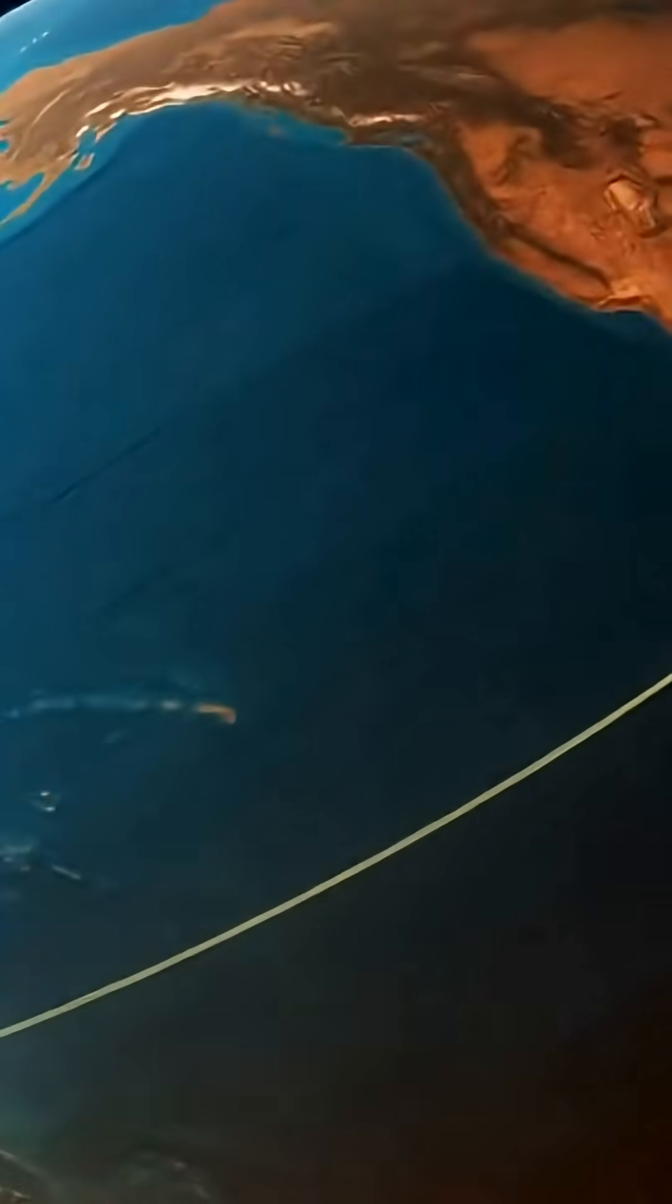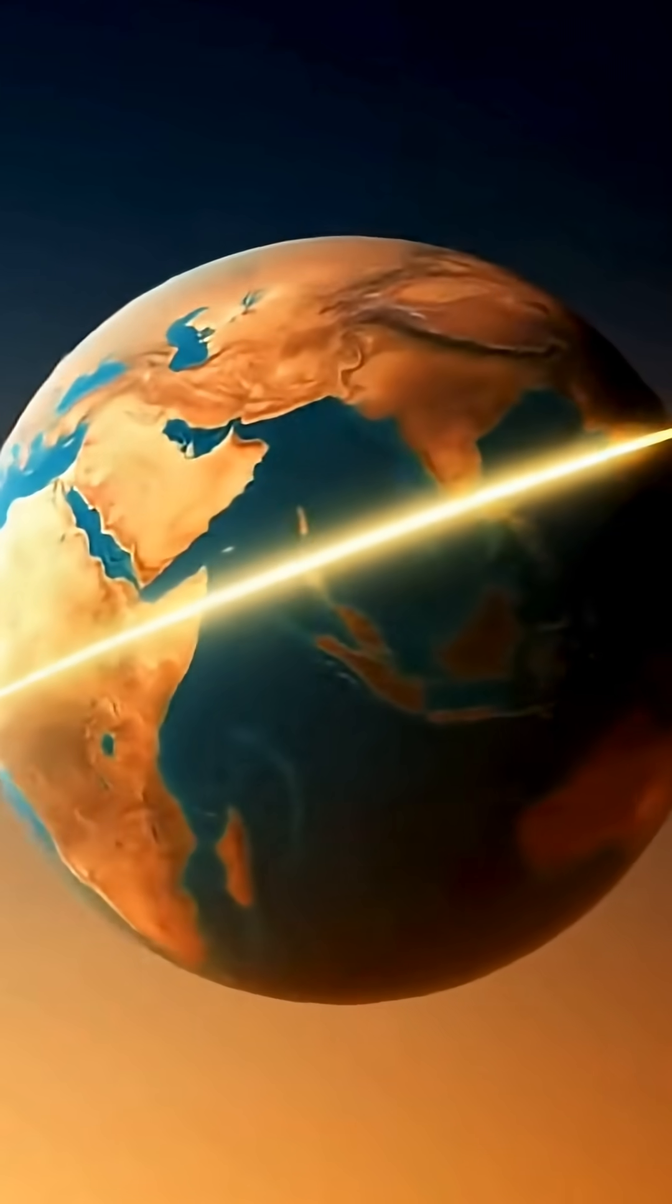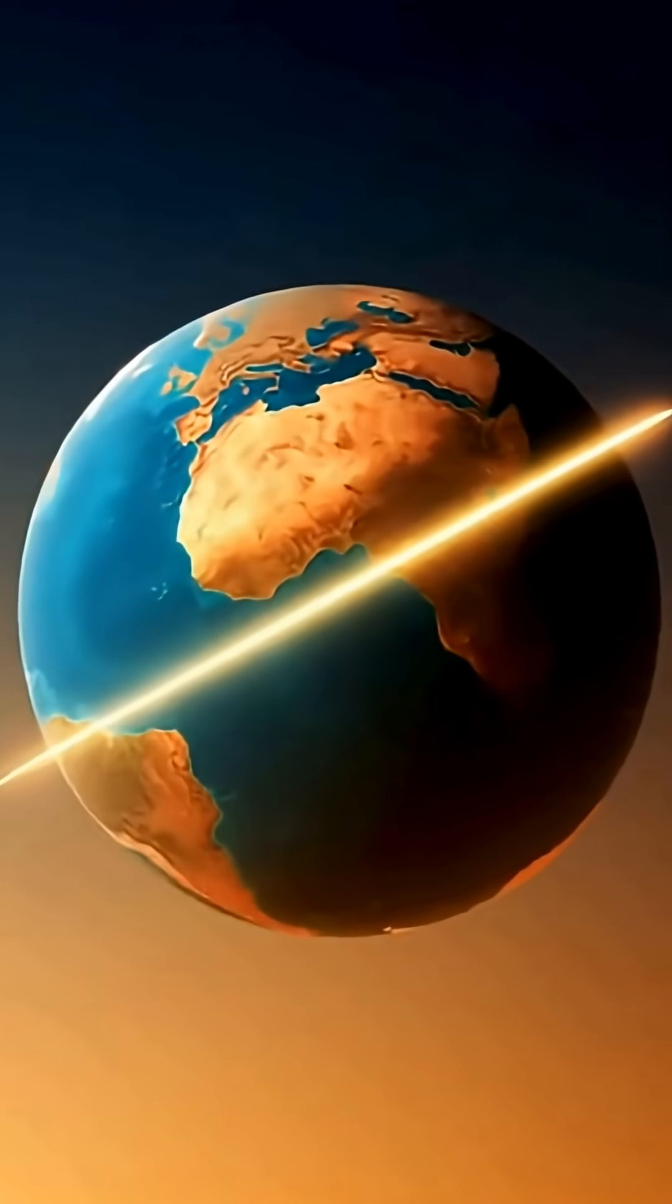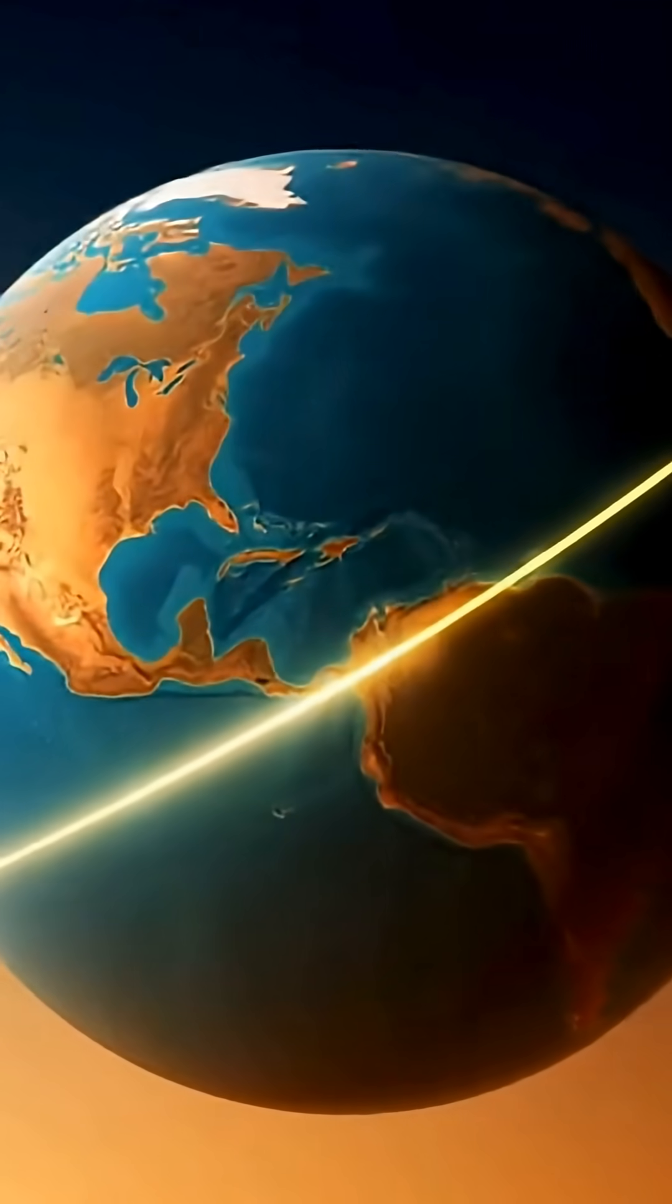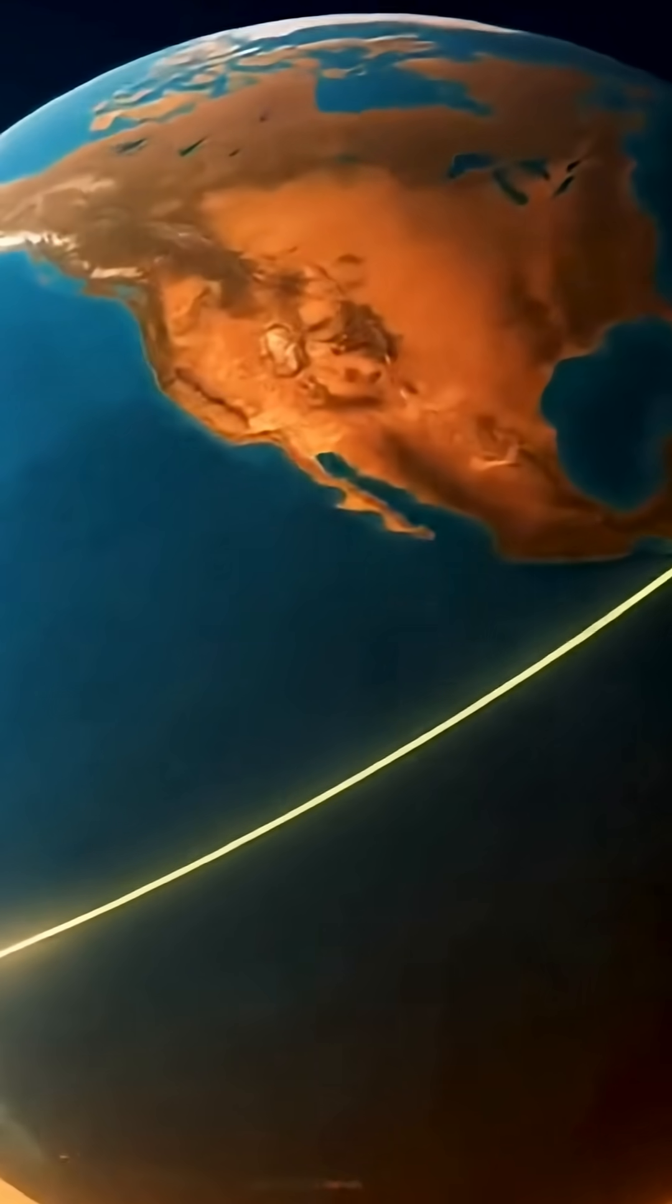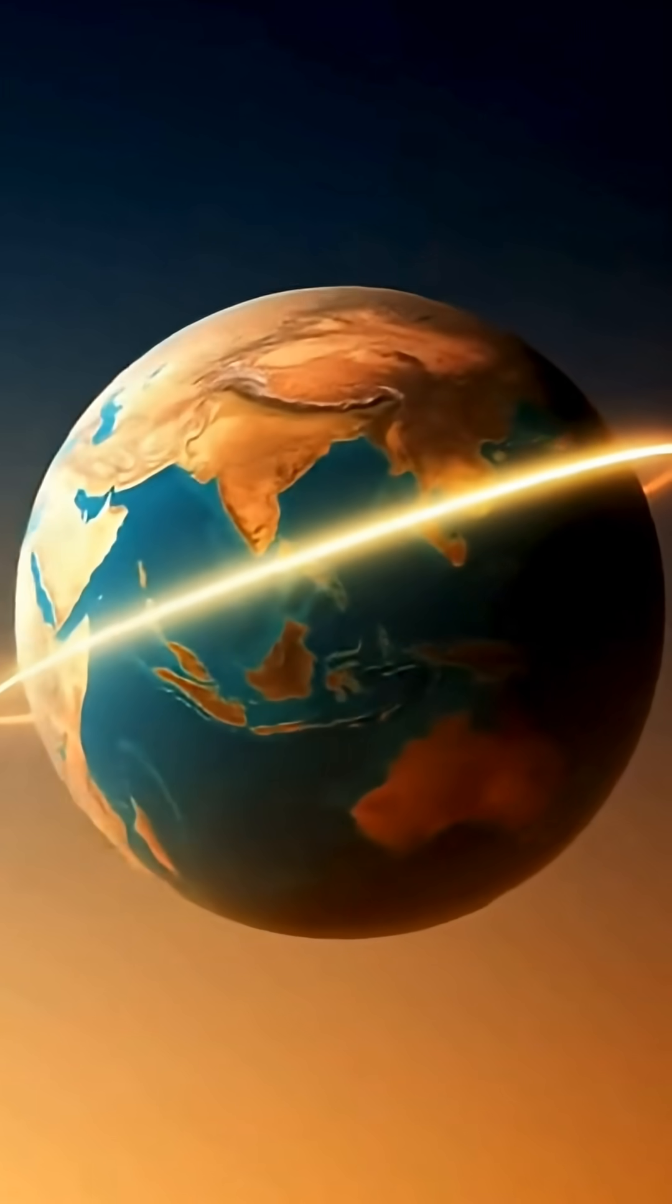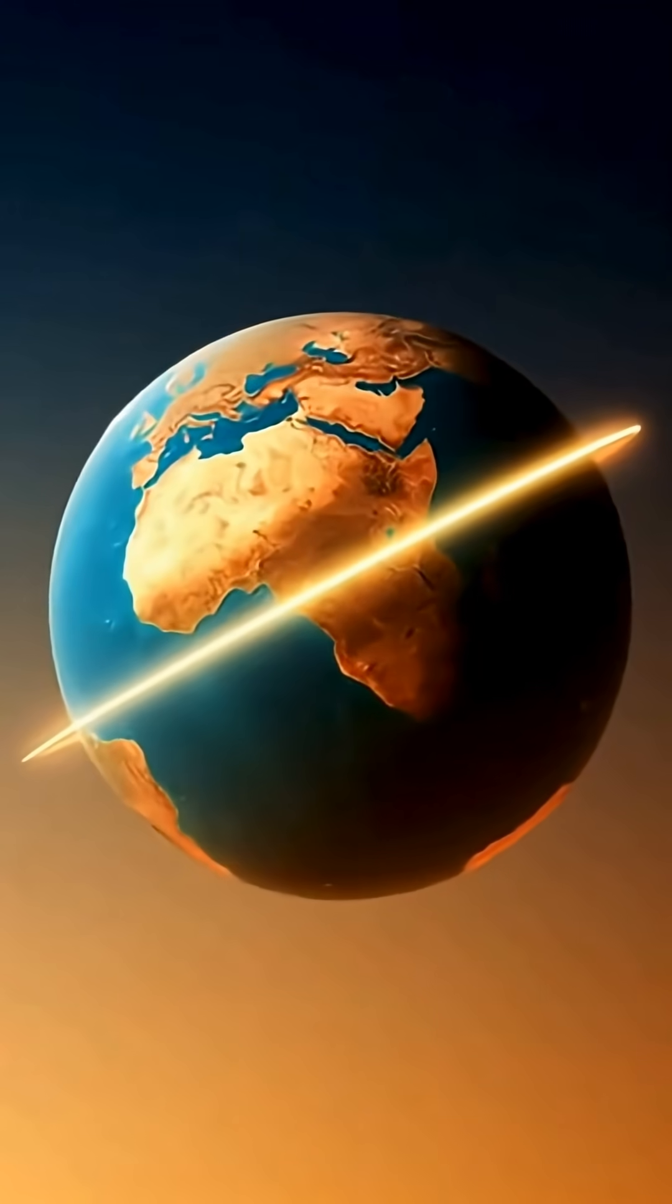The equator sits at the very center of the planet, where sunlight strikes the surface at near-direct angles throughout the entire year. This keeps solar energy consistently concentrated, with little variation between seasons. Unlike areas farther from the equator, the angle of sunlight here does not change significantly between summer and winter.